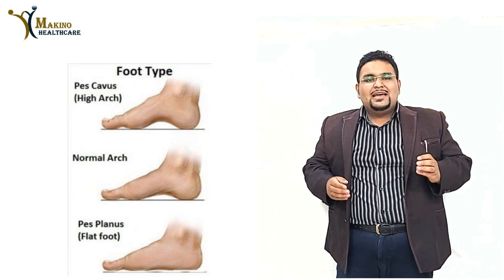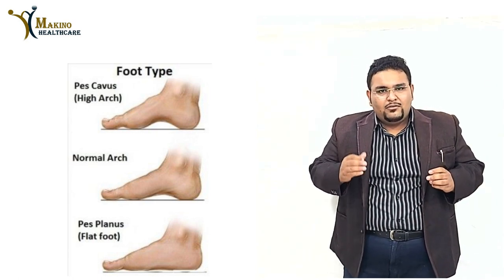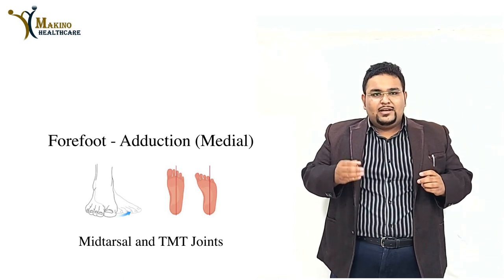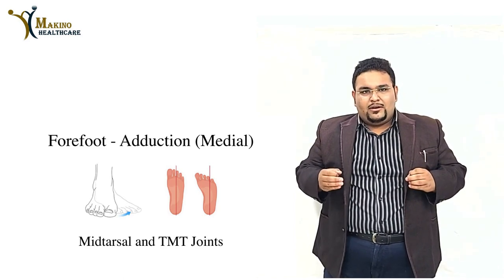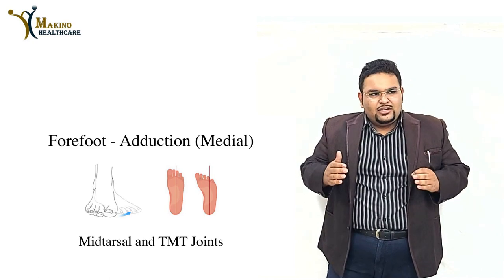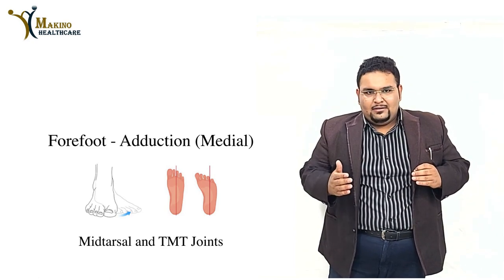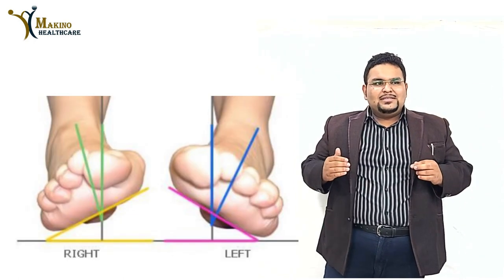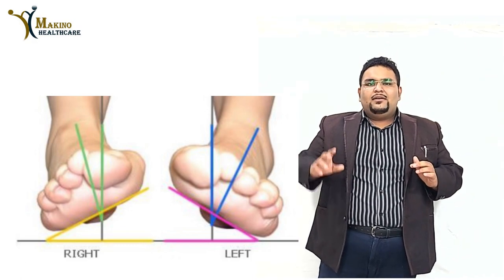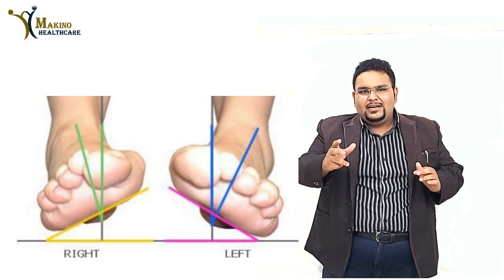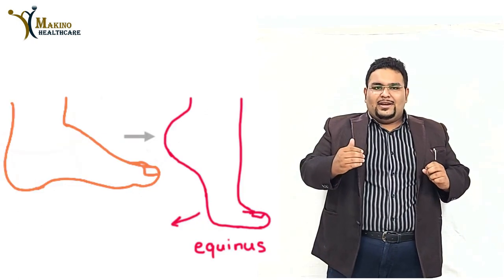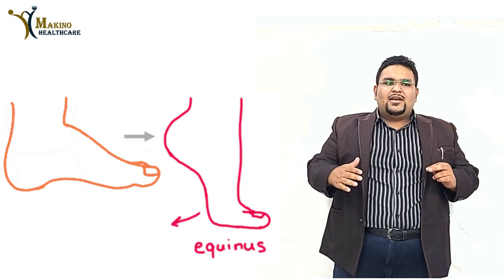The first term is cavus — cavus is an exaggerated medial arch of the foot. The second term is adducted forefoot, which is the adduction of the forefoot towards the midline, most commonly seen in CTEV. Third is varus — when the foot is observed from the posterior aspect and appears medially deviated towards the midline. Fourth is equinus — when the foot is in a plantar flexed position.